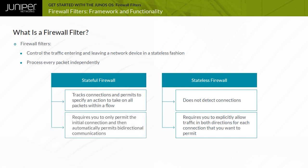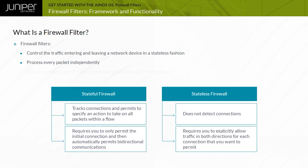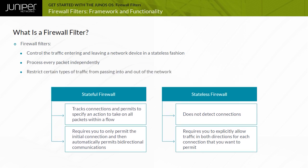Stateful firewall filters only require you to permit the initial connection, and then automatically permit bidirectional communications for that connection. You can use firewall filters to restrict certain types of traffic from passing into and out of your network.